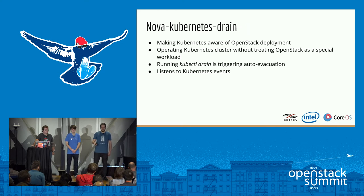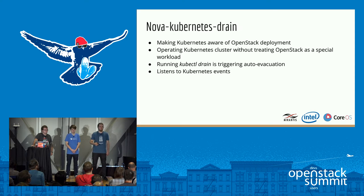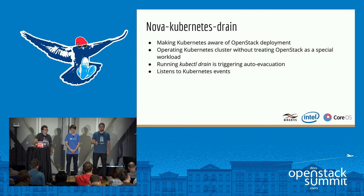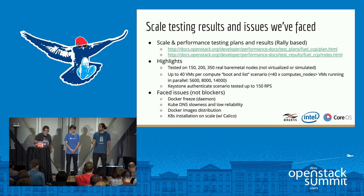Another feature is Nova Kubernetes drain integration. We make Kubernetes aware of the OpenStack deployment so running kubectl drain — putting a Kubernetes node into maintenance mode — is caught via the Kubernetes event stream and triggers auto-evacuation: disabling the node in OpenStack and performing live migration of all VMs from that node.